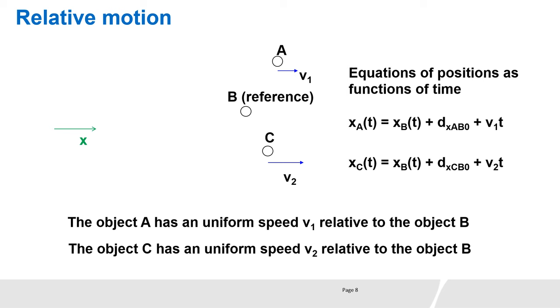x-a of t equals x-b of t plus dx-ab0 plus v1 t. The time t can, for example, be expressed in seconds and v1 in meter per second. dx-ab0 is the distance between A and B at t equals 0. We can write the same thing for the position.